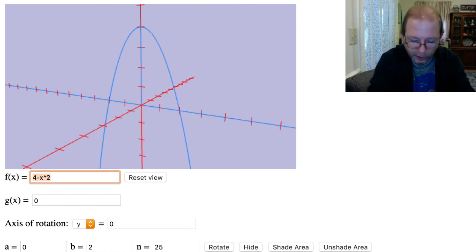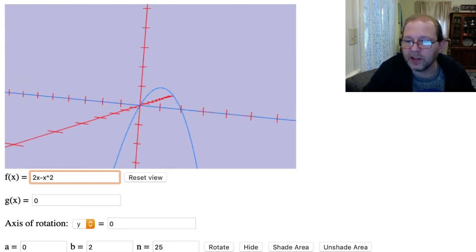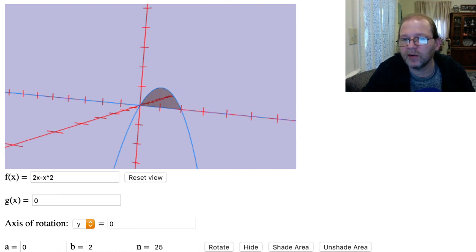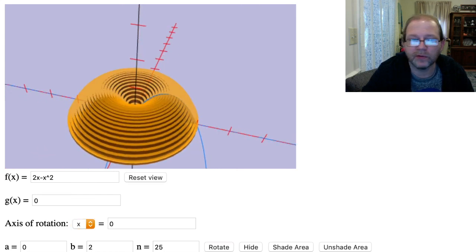Alright, so the parabola we're looking at is 2x minus x squared, and so that's this bit right here. If I shade that in, if we take that and rotate it around the y-axis, now the y-axis is the line x equals zero. When I rotate that, we get this sort of shape here.